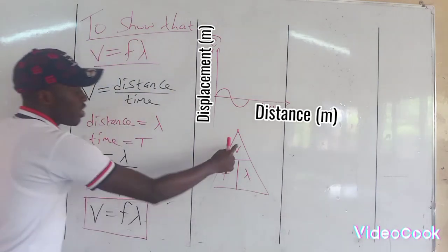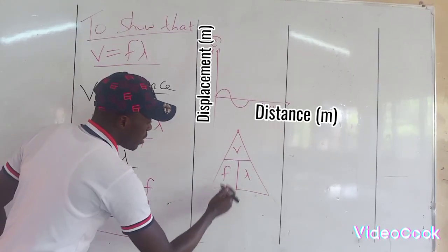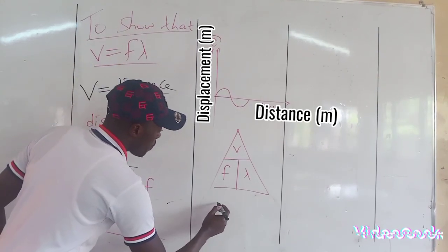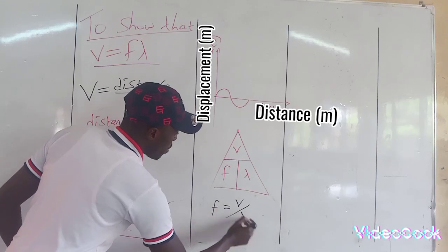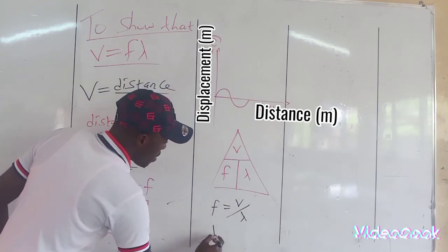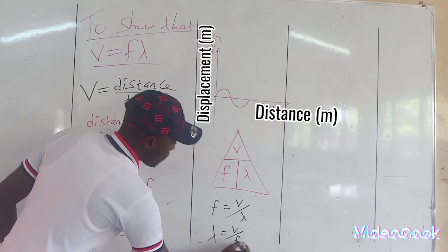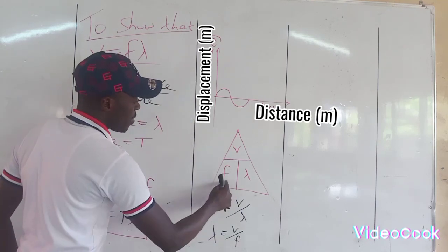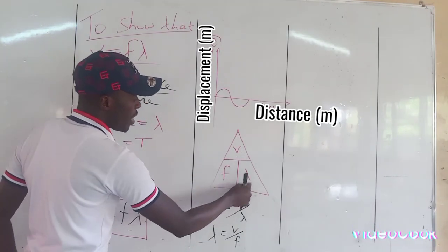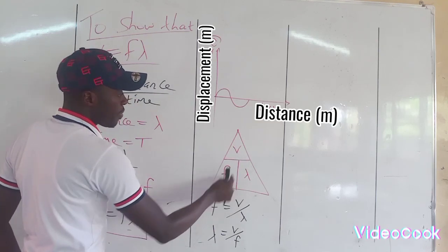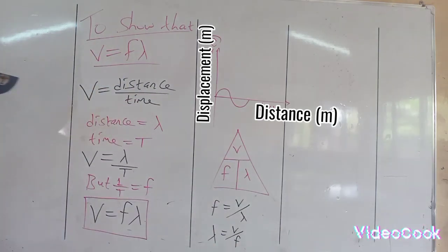Velocity equals frequency times wavelength, and that translates to: frequency is velocity over wavelength, and wavelength is velocity over frequency. Then velocity is frequency times wavelength.